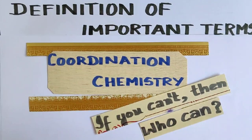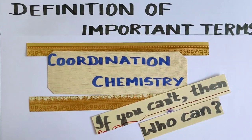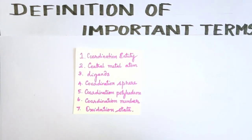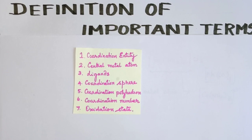Hello students. This video is about Coordination Chemistry - Definition of Important Terms. In this Coordination Chemistry chapter, we will talk about basic scientific terms. There are 7 important terms: First is Coordination Entity, second is Central Metal Atom, third is Ligand, fourth is Coordination Sphere, fifth is Coordination Polyhedron, sixth is Coordination Number, and seventh is Oxidation State.